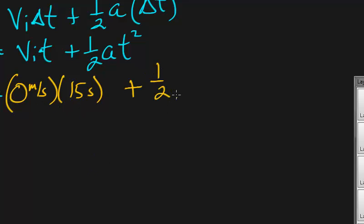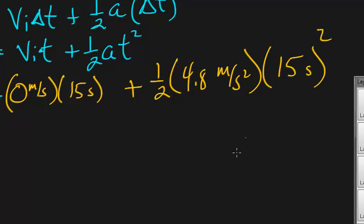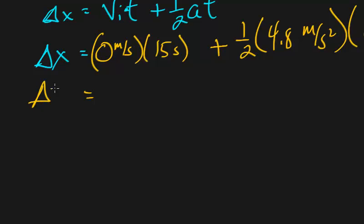1 half a, which our acceleration is 4.8 meters per second squared, times the time which is 15 seconds, and that's squared. This is what's squared, the only thing that's squared right there. Delta x equals, and that's 0, so that whole thing just goes away.